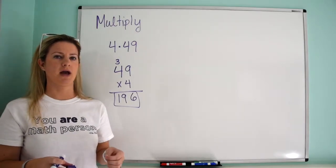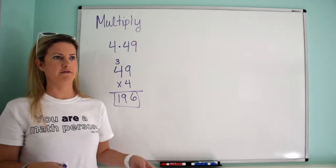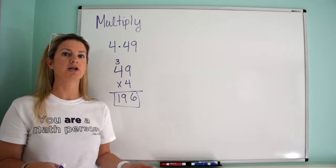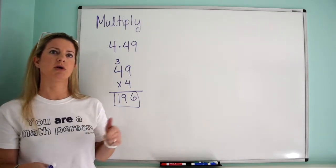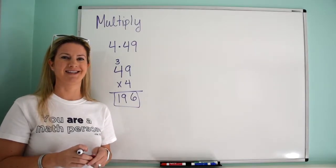Oh, 4 times 49? Well, 49 is 1 less than 50, and 4 times 50 is 200, but then it's 1 less, and I did it 4 times. So 200 minus 4 is 196, and that's the answer.